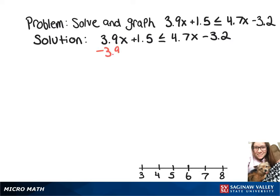So our first step is going to be to subtract 3.9x from both sides. And now we've got 1.5 is less than or equal to 0.8x minus 3.2.